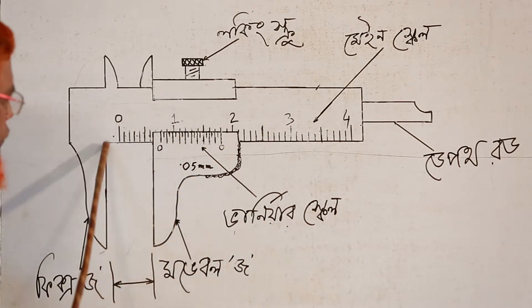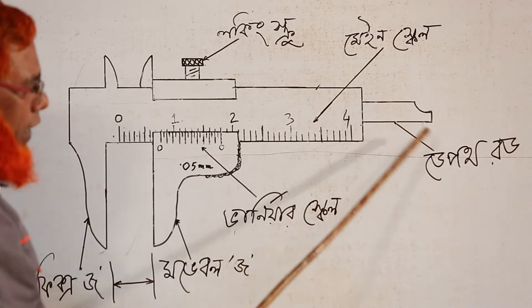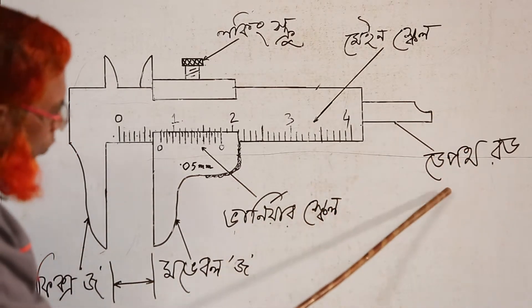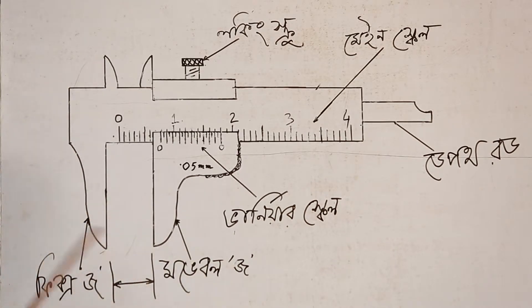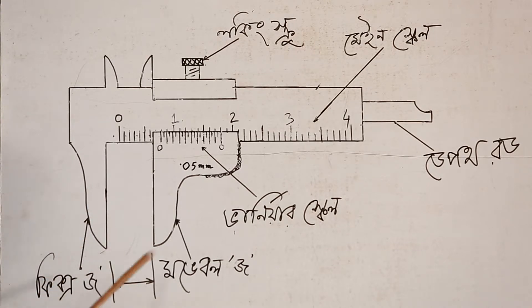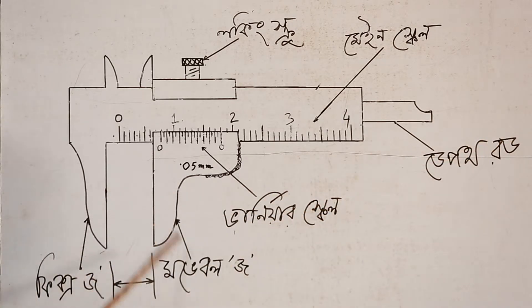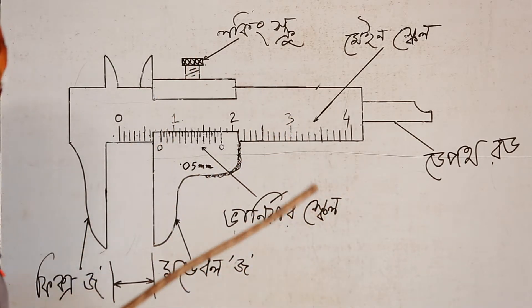This is the Vernier scale. The road is called a Vernier scale, a Vernier division. And this is the state — we see this state. This is fixed, and this is the movable state.